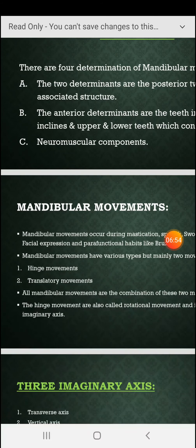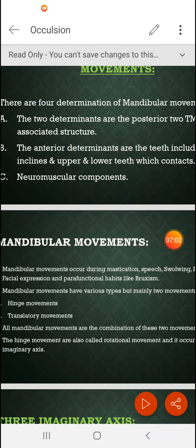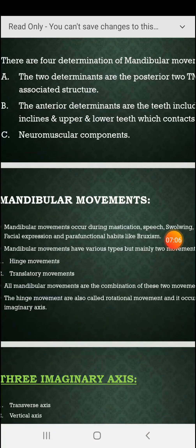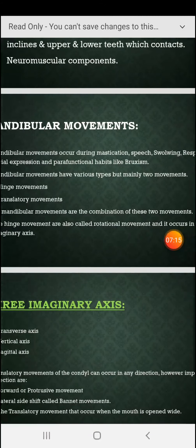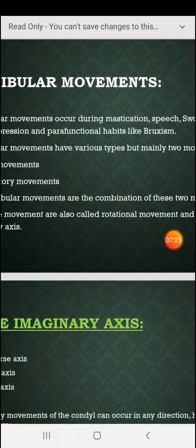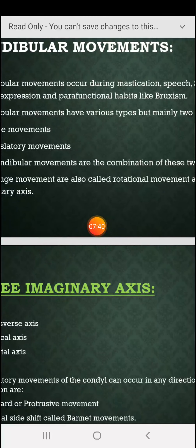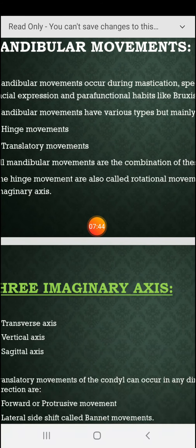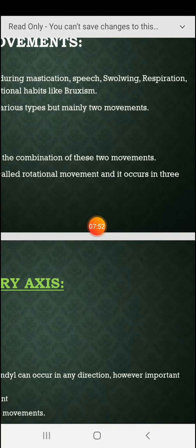The determinants of mandibular movement are: the posterior temporomandibular joint, anterior teeth with their occluding cuspal inclines, and the neuromuscular components — the muscles of mastication. Mandibular movements occur during mastication, speech, swallowing, respiration, facial expression, and functional habits like bruxism. The main movement types are hinge movements and translatory movements.